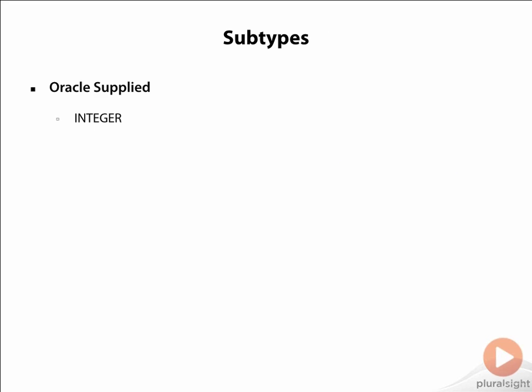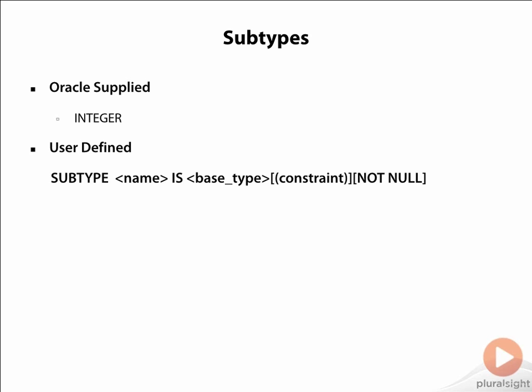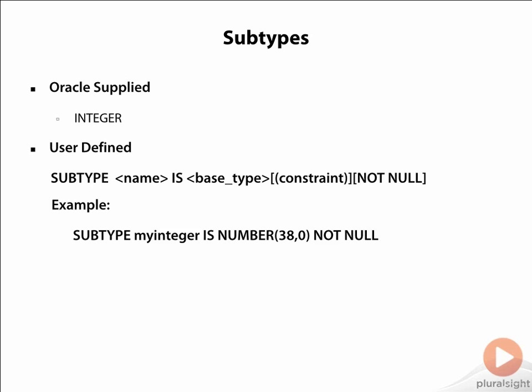Oracle provides us with a lot of subtypes like integer, numeric, etc., as we saw in the previous slide. It also gives us the ability to define our own subtypes. The syntax for defining subtypes is: subtype, name of the subtype, is base type, with an optional constraint and an optional not null clause. For example, we can define a subtype my_integer which is of base type number with a constraint of precision 38 and a scale of 0, and is additionally not null.